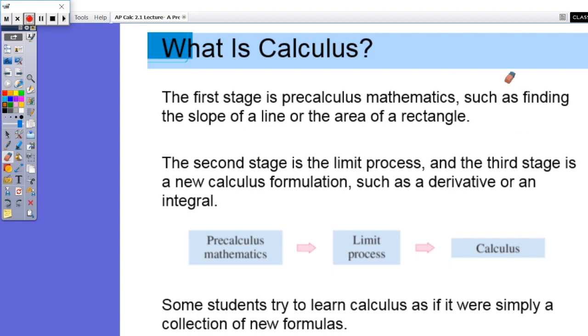The second stage is the limit process, and we'll get further into this later in this chapter. After we learn the limit process, the third stage is new calculus formulation such as a derivative or an integral. That's really where our new math comes in. So as you can see, pre-calculus mathematics comes first, then we use the limit process, and that develops our calculus.